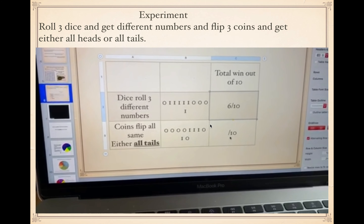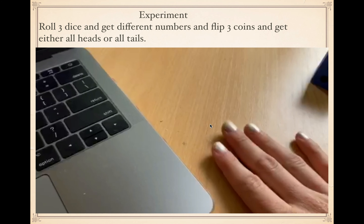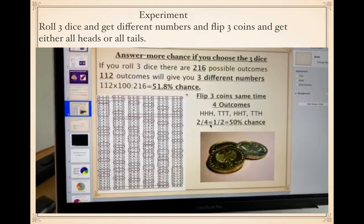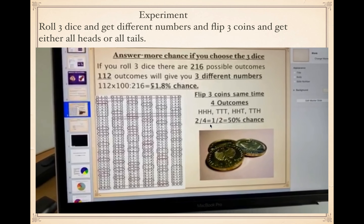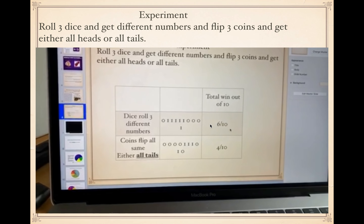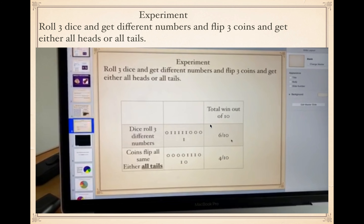So six out of ten for rolling the dice and four out of ten for coins — as predicted in our probability calculation, the dice wins. I've done this experiment a few times and every time the dice wins, so that must be saying something. You can try this at home if you have three coins and three dice.